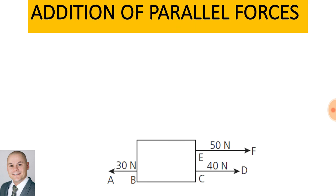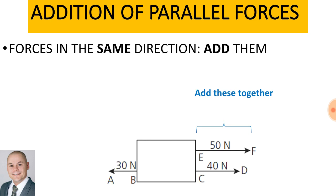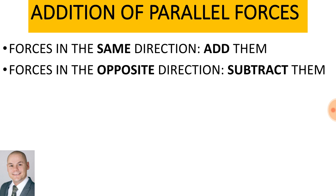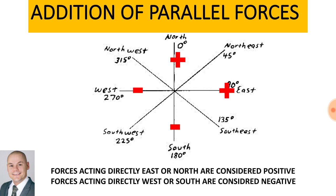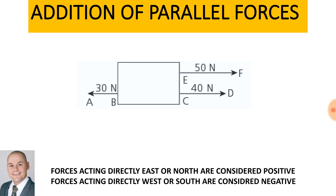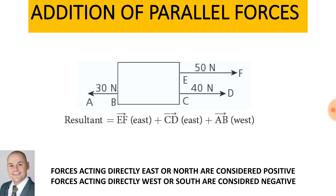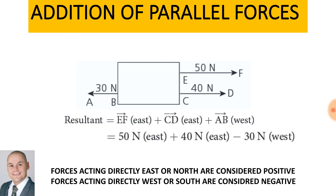In terms of addition of parallel forces, when forces are in the same direction we add them. Here we have 50 Newtons and 40 Newtons pointing east, so we add those together. Forces in the opposite direction we subtract. The 90 Newtons east minus the 30 Newtons west. Forces acting directly east or north are considered positive, and forces acting directly west or south are considered negative. Using this formula: force east plus force east minus force west — 50 plus 40 minus 30 gives us a resultant of 60 Newtons.